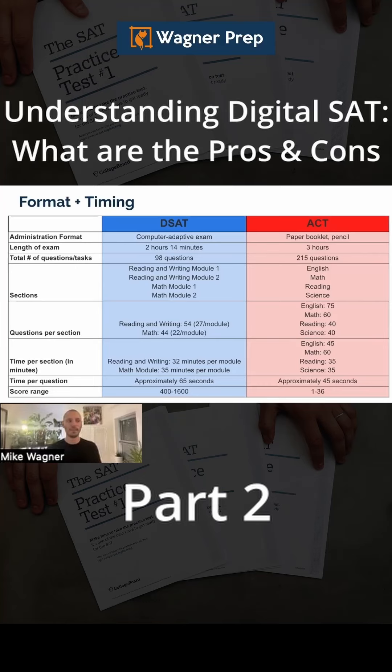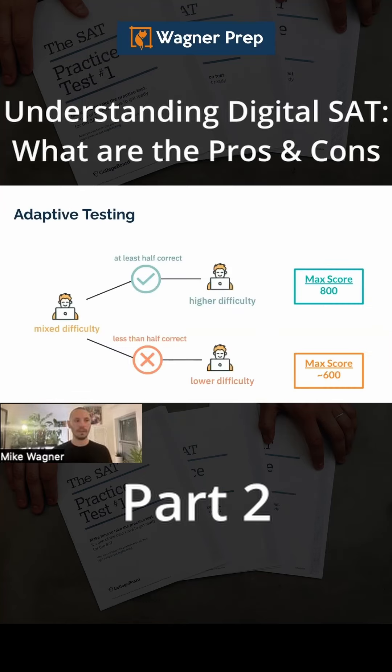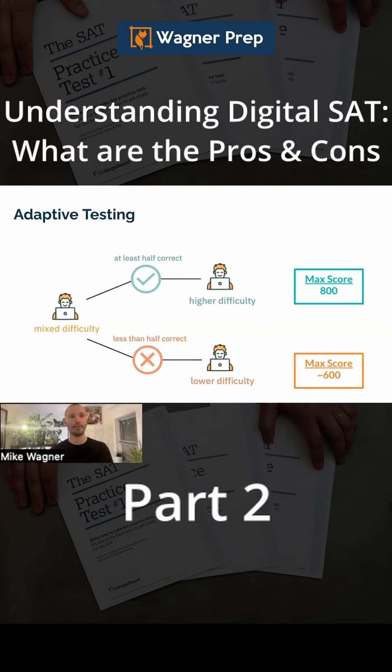The digital SAT is also adaptive. What that means is that after the first half of English and after the first half of math, you get to a spot where you then diverge.